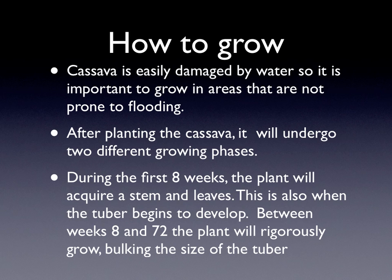After planting the cassava, it will undergo two different growing phases. During the first eight weeks, the plant will acquire stem and leaves. This is also when the tuber begins to develop. Between weeks 8 and 72, the plant will rigorously grow, bulking the size of the tuber.